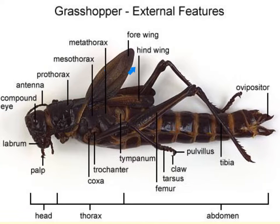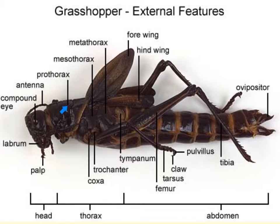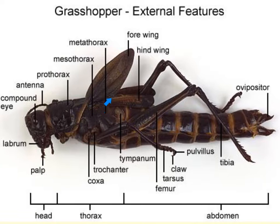The thorax region can be broken down into three sub-regions: the prothorax, the mesothorax, and the metathorax. The prothorax contains the first pair of walking legs. The mesothorax contains the first pair of wings and the second pair of walking legs. The metathorax contains the second pair of wings and the third pair of walking legs.